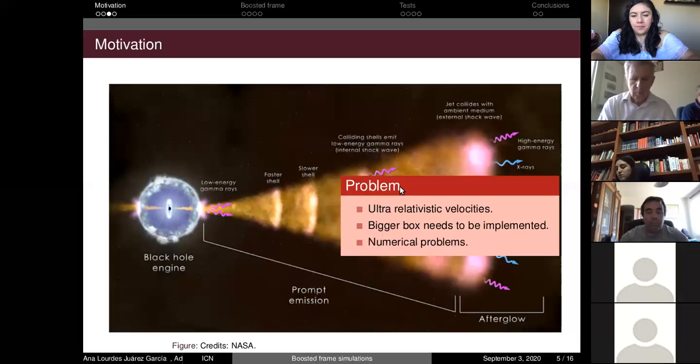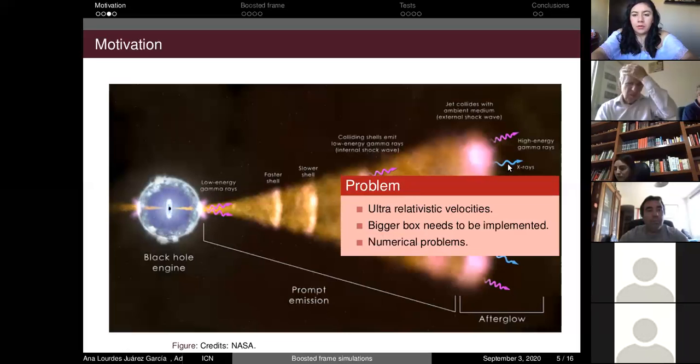So in order to solve this problem, we had the idea to plot the simulation in a system of reference that moves with the fluid. This is a boosted frame. In this frame, the shells will have mildly relativistic velocities, and since all the distances and sizes are going to contract in the boosted frame, we are going to need a smaller box for the simulation.